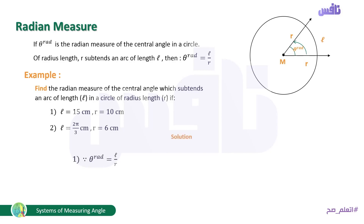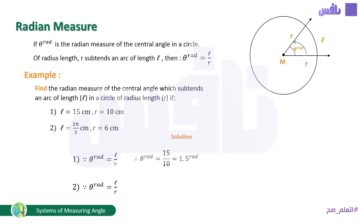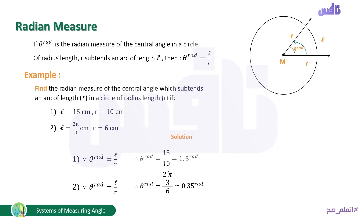The required is to find the radian measure using θ = L/r. For case 1: θ = 15/10 = 1.5 rad. For case 2: θ = (2π/3) ÷ 6. We can use π ≈ 3.14 or 22/7 on the calculator. The result is approximately 0.35 rad.